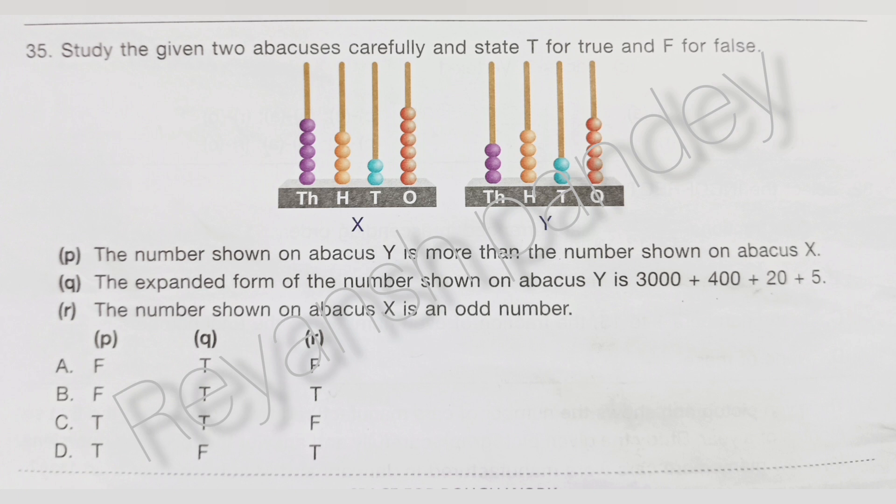Study the given 2 articles carefully and state T for true and F for false. The answer is A. The 1st statement is false, the 2nd is true, and the 3rd statement is also false.